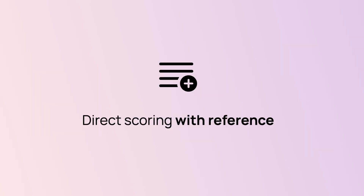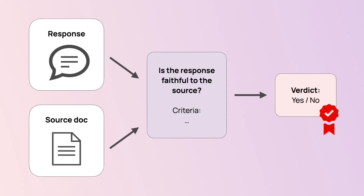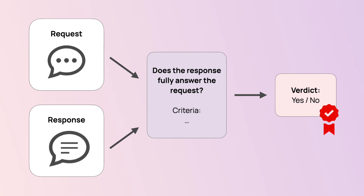You can add more information to the evaluation prompt as well. For example, you can pass the chatbot response and the source it was based on, then ask 'does this response contradict the source?' to check for possible hallucinations. You can also pass a question and its answer and ask to evaluate completeness, like 'does this response fully address the question?'